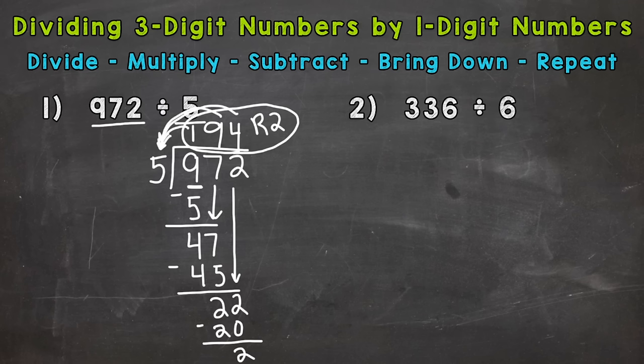And this problem, we're going to use the same process, but it is a little different. You'll see why here with the first step. So let's set it up: 336 divided by 6. Our first step is divide. We take a look at our first number here, and we have 3 divided by 6. How many whole groups of 6 can we pull out of 3? Well, we can't do that. We don't have enough to pull a whole group of 6 out of 3.